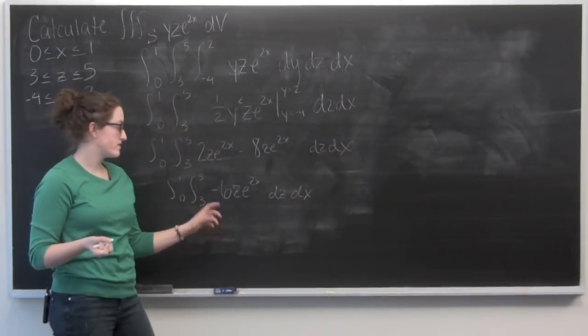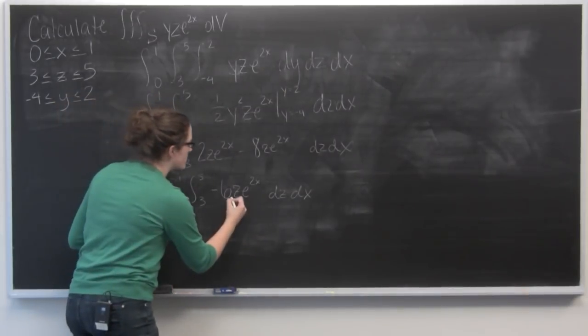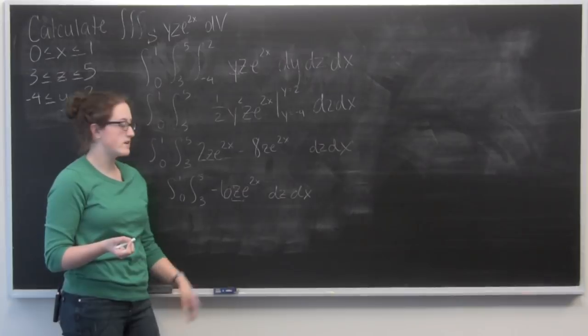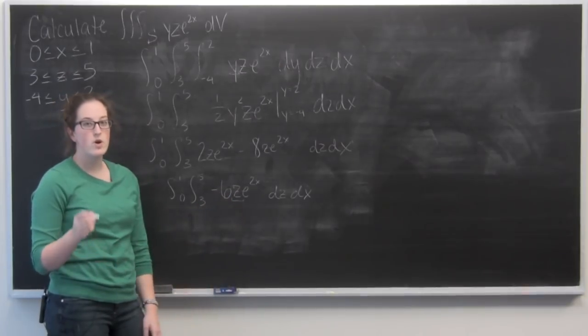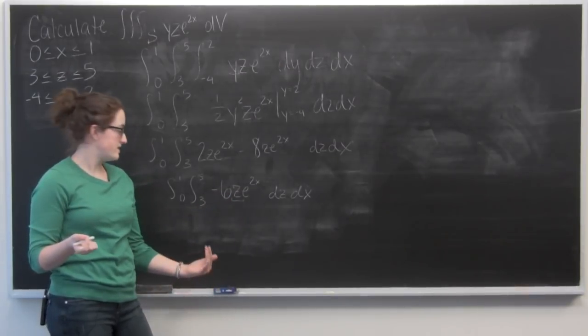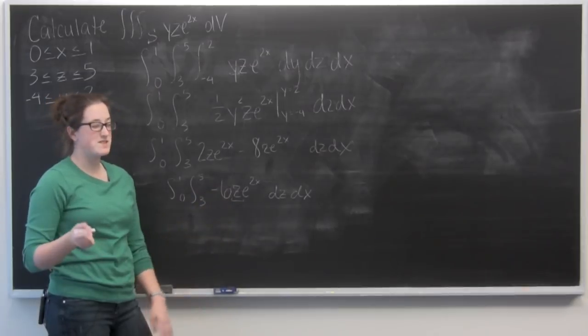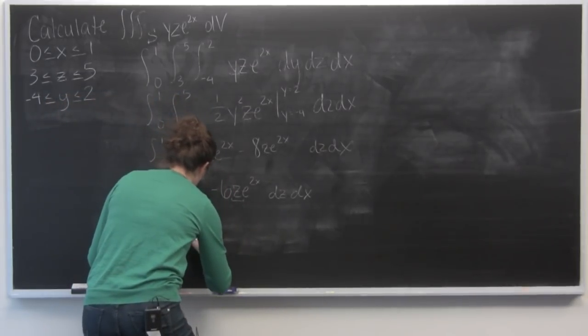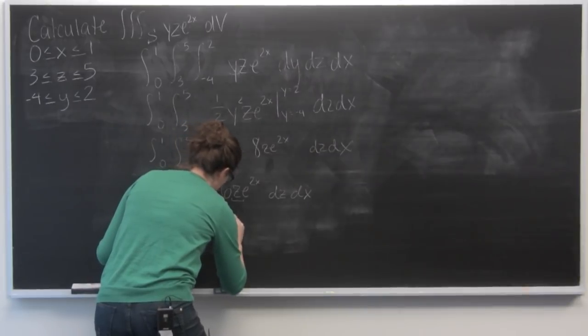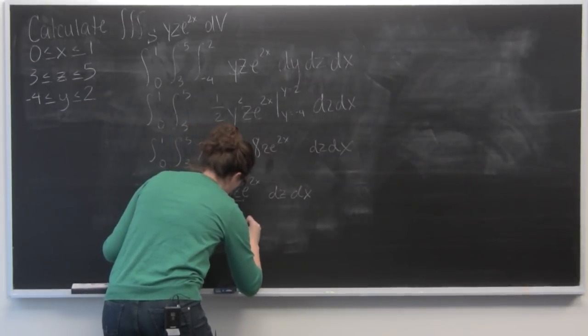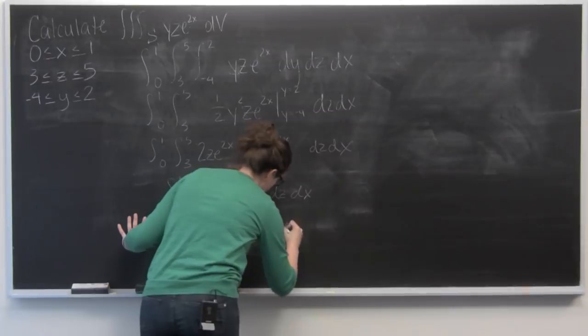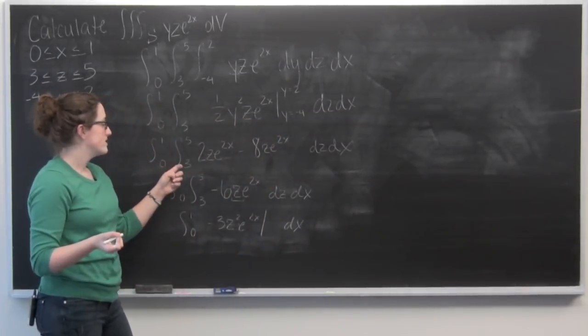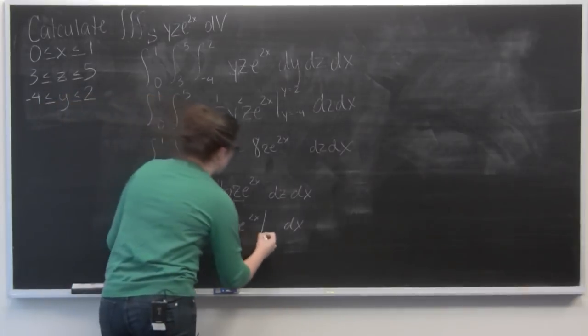So now I want to integrate with respect to z. The only thing that's a function of z here is z. So the integral of z is 1 half z squared. We take this negative 6 here. So negative 3. Now you just want to evaluate from z equals 3 to z equals 5.